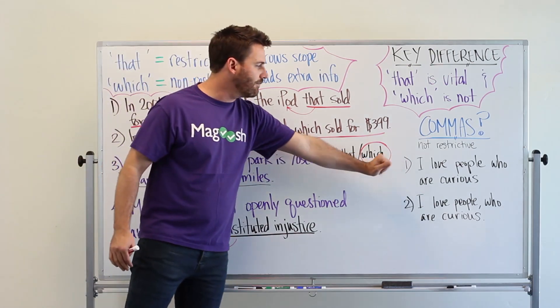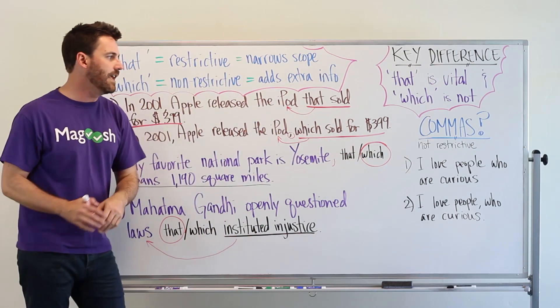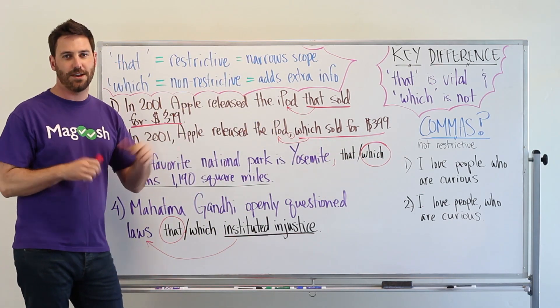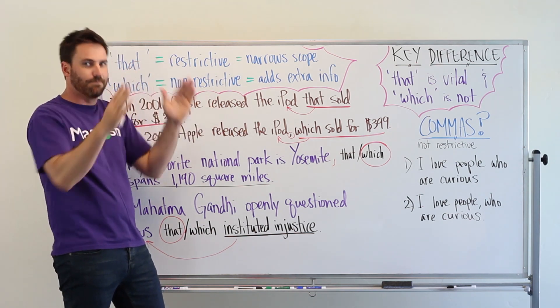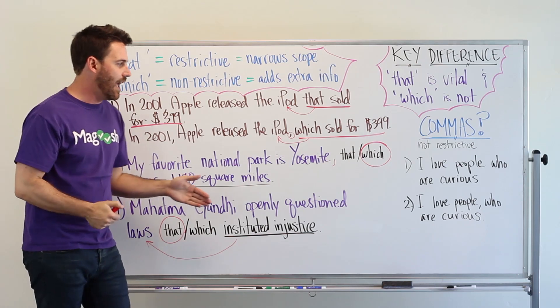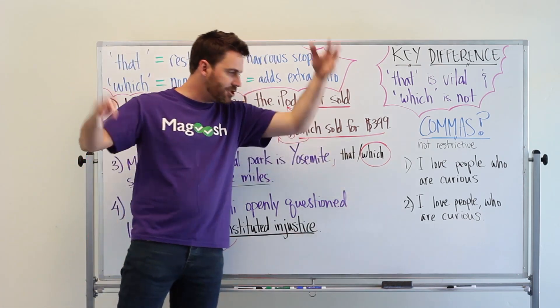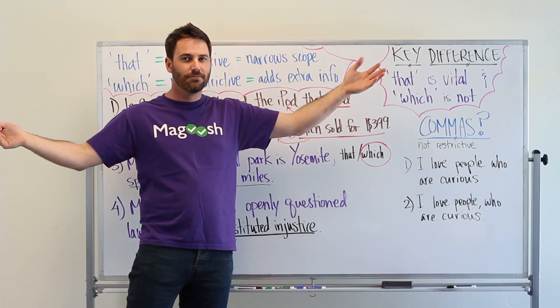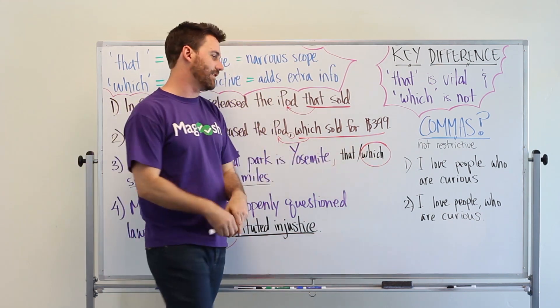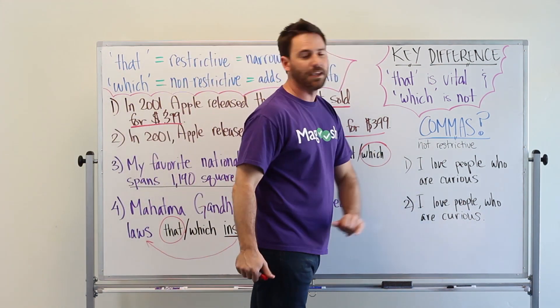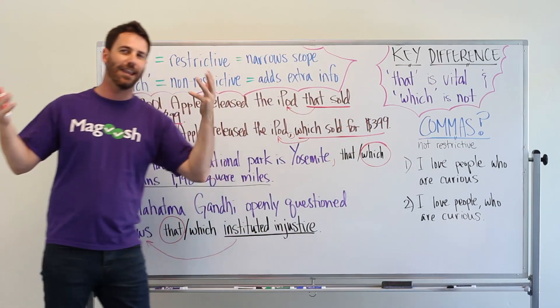So in the first one, I love people who are curious is a restrictive phrase. So that means I only like people who are curious. That particular sort of strand of person. Whereas two is more general. I love people. And I love the fact that people are curious. So it's this idea that people can be curious but overall I love people.